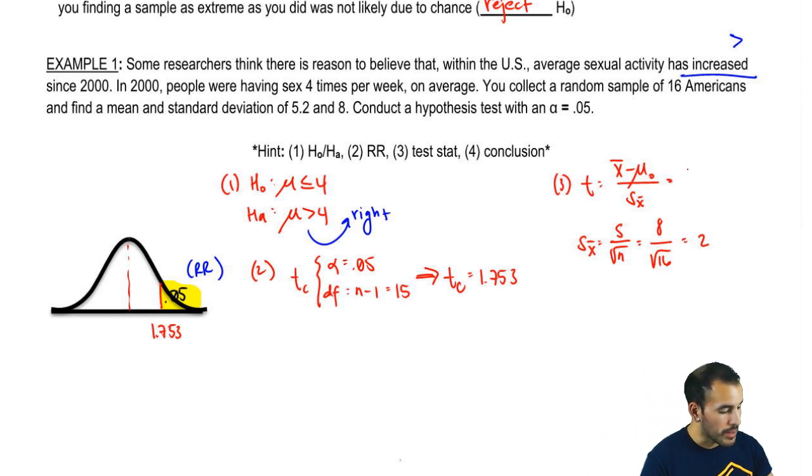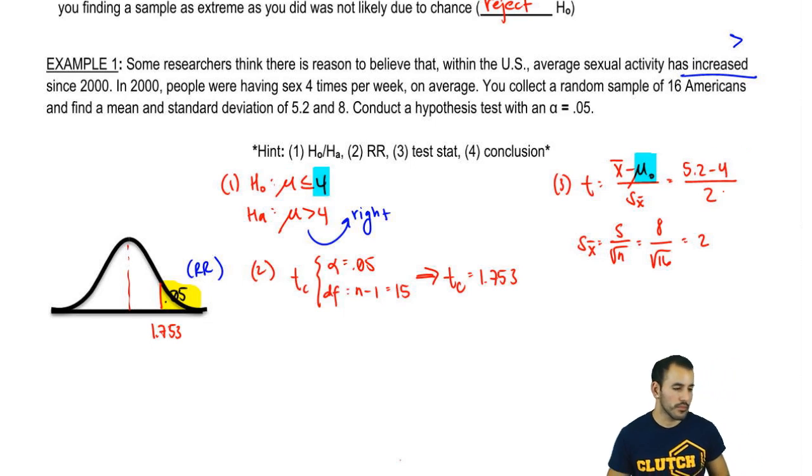And then from there, we have x bar minus the mean over the standard deviation. So x bar minus the mean, we have 5.2 minus the mean from the null hypothesis. Our null says that it should have been 4, over 2. So 5.2 minus 4 is 1.2, 1.2 divided by 2 is 0.6. So our t is 0.6, and now we need a final conclusion.